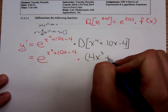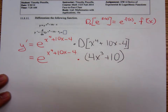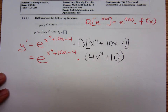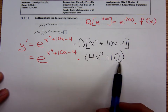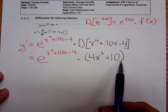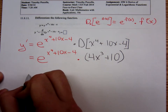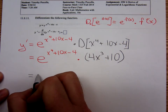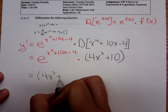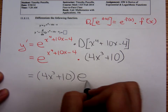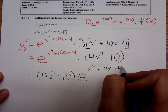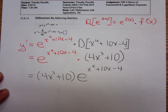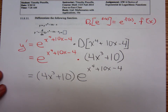That derivative is 4x cubed plus 10. There's really not much we can do to simplify this. It looks better if we put the 4x cubed plus 10 factor in front of the e, giving us a final answer of 4x cubed plus 10 times e to the x to the fourth plus 10x minus 4. But there's really nothing else we can do to simplify this — nothing obvious at least.